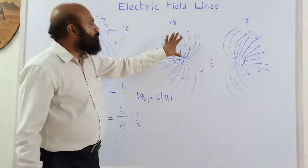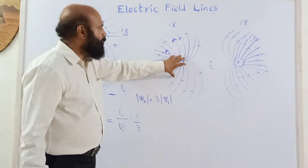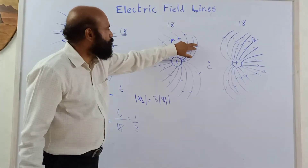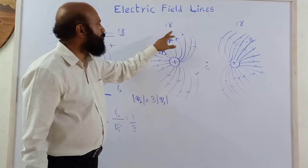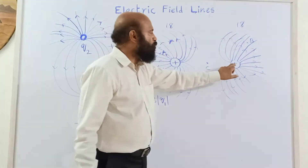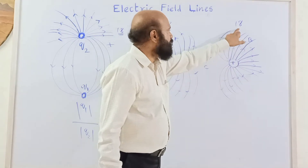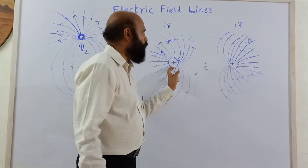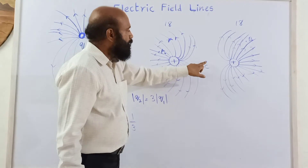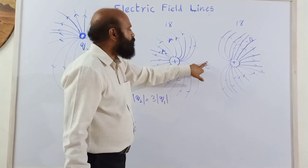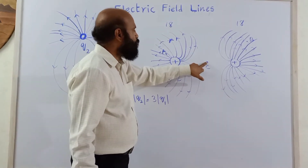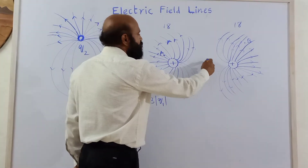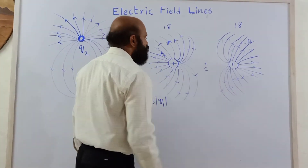If you count the number of lines starting from each charge, you can see it is 18 for one charge and 18 for the other. That means these two charges are equal. Then at point C, there are no electric field lines, so the field at C is zero.